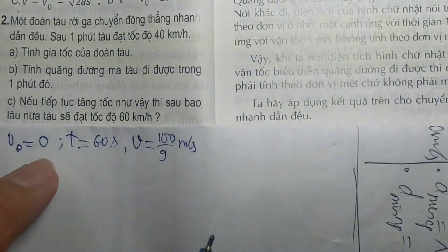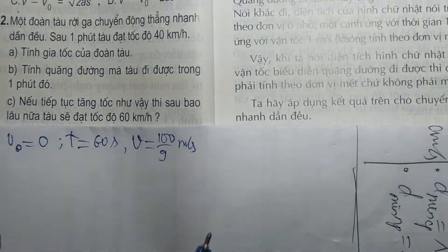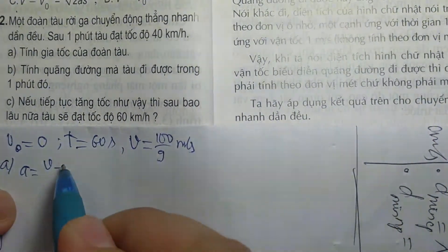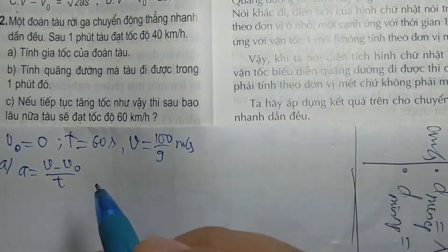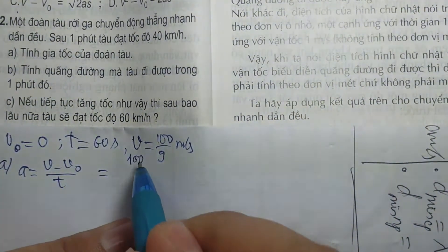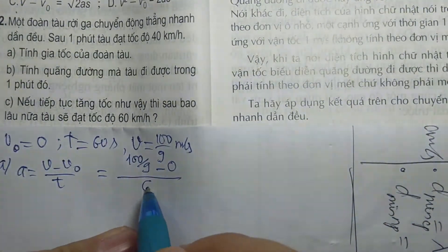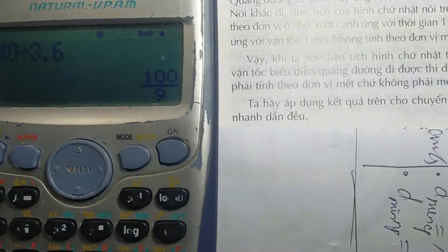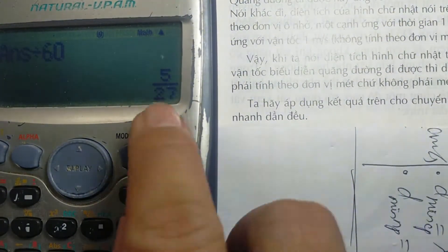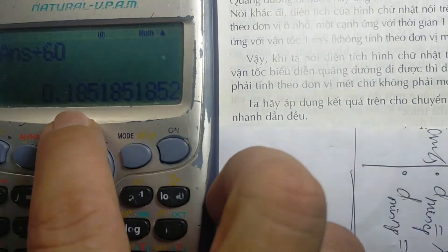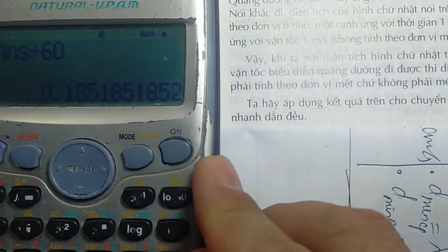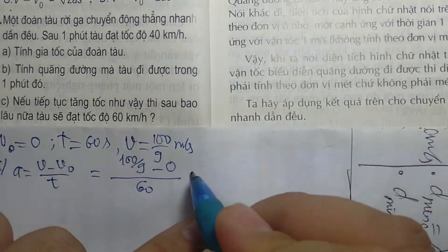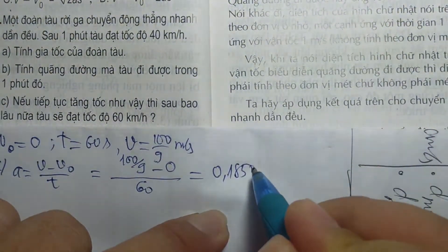Câu A rất dễ: A bằng (V trừ V0) chia T. Thế vào: (100/9 trừ 0) chia 60 bằng 5/27. Bấm SD ra 0,185. Vậy gia tốc A bằng 0,185 m/s². Các con có thể để phân số 5/27 cũng được.